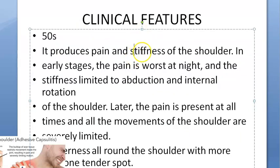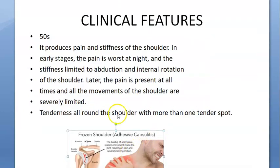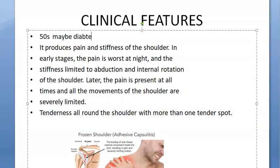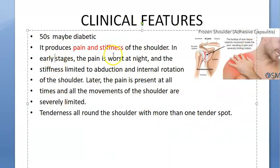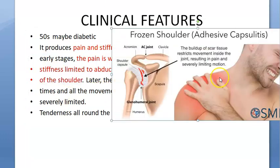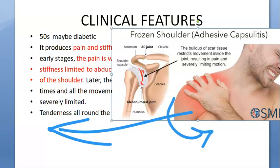Now for the clinical features: these patients will be in their 50s and may be diabetic. They will have pain and stiffness in the shoulder. Pain is worst at night. The stiffness is limited to abduction and internal rotation - so they cannot abduct and cannot internally rotate the shoulder.